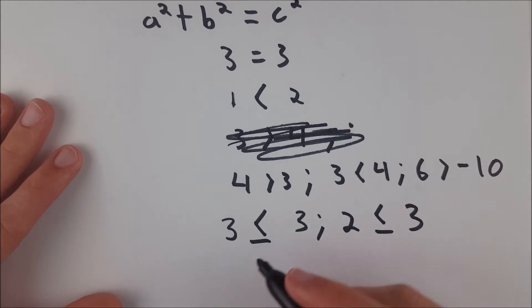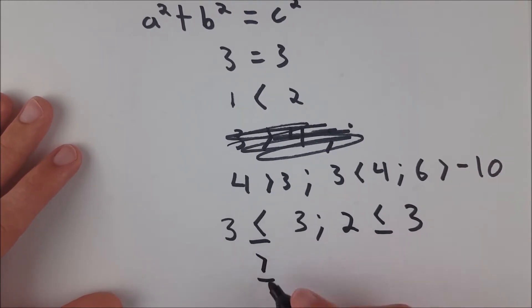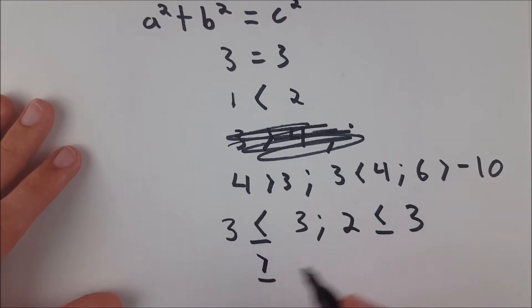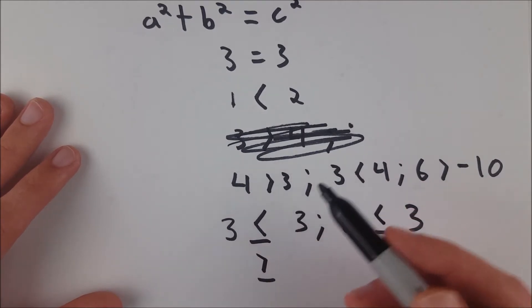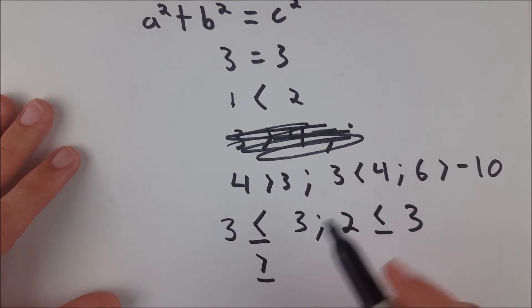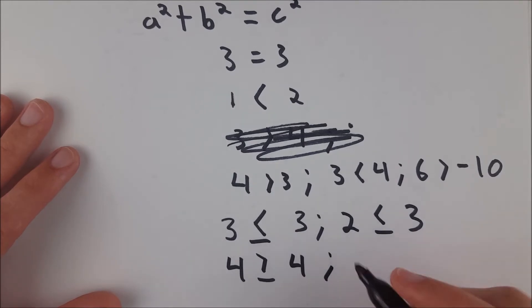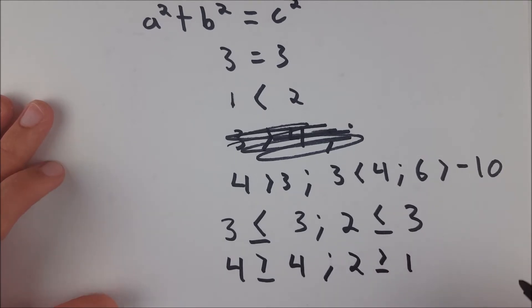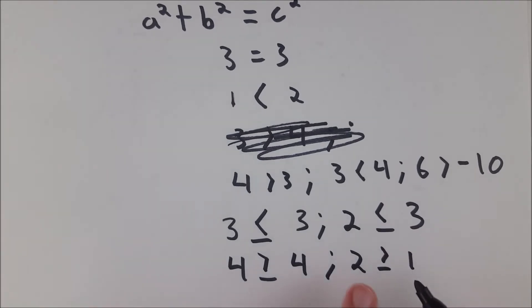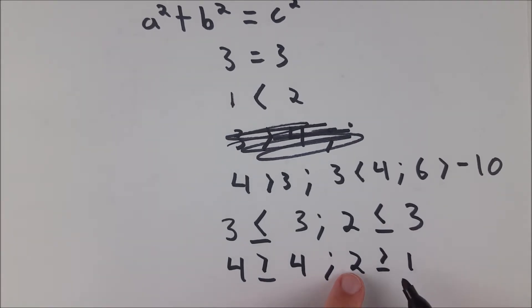And then the other one, as you might be able to guess, is greater than or equal to. Which is greater than sign with half an equal sign under it. Similarly, just like before, the two quantities can now be equal. Unlike the original greater than sign, where the quantity on the left had to be greater than the one on the right, we could write 4 is greater than or equal to 4. And this is a true statement because 4 is equal to 4. And we could also write 2 is greater than or equal to 1 because 2 is greater than 1. So this allows for either one to be true. The statement is still true as long as the left quantity is greater than the one on the right or if the left quantity is equal to the quantity on the right.